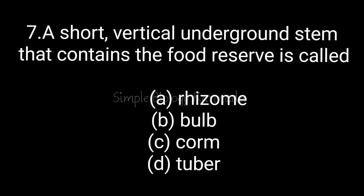Next question: a short vertical underground stem that contains the food reserve is called — option A: rhizome, B: bulb, C: corm, D: tuber. The keyword here is 'vertical underground' — that relates to corm. Rhizome is horizontal, bulb is a small reduced disc shape, tuber has a swollen tip. So the answer is option C: corm, the vertical underground stem.